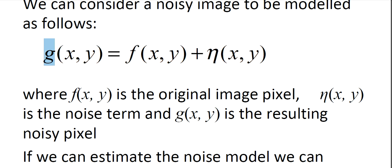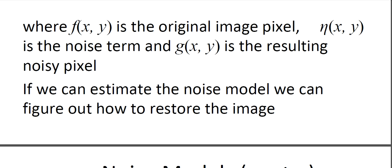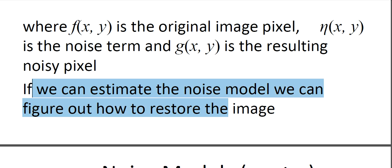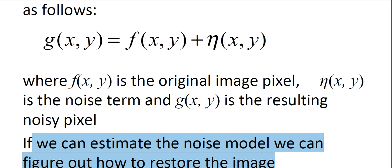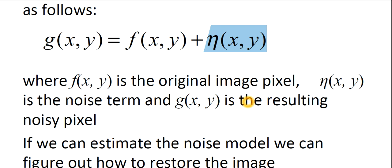f(x,y) is our original pixel, η(x,y) is the noise term, and after that addition, we get our noisy pixel z(x,y). If we can estimate the noise model, we can figure out how to restore the image.